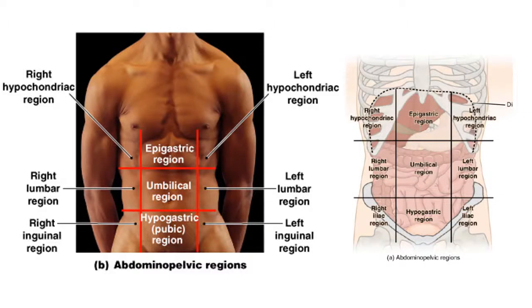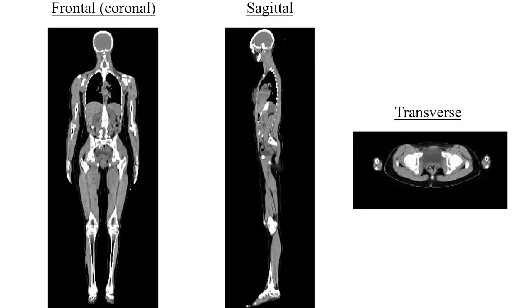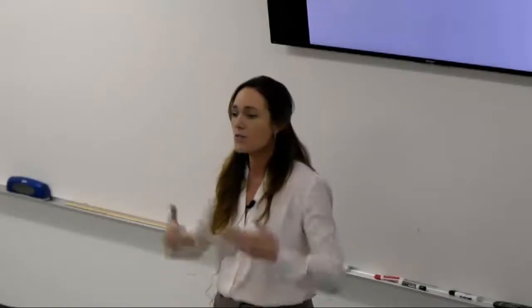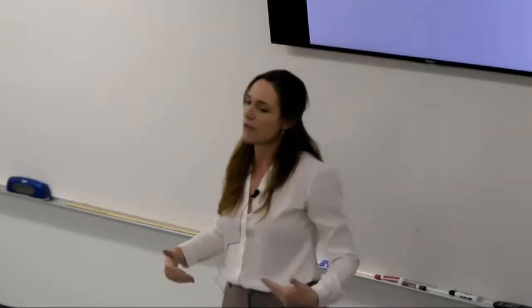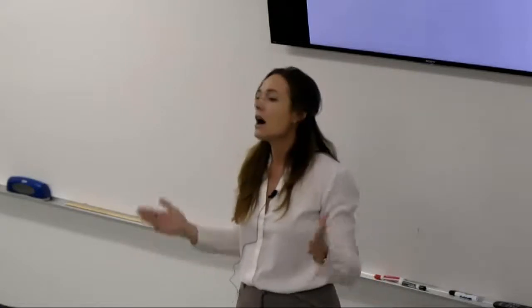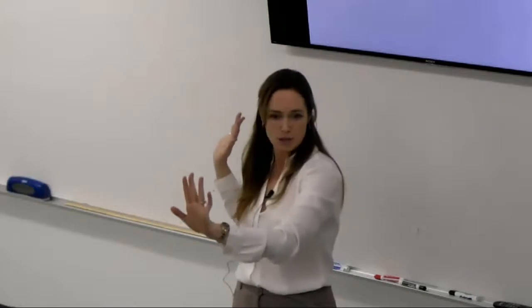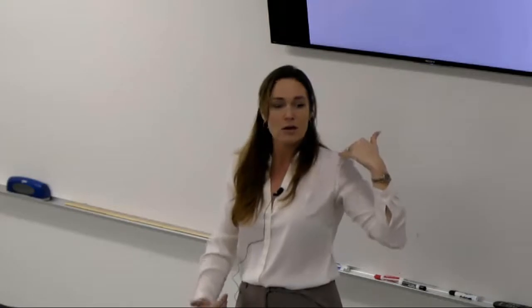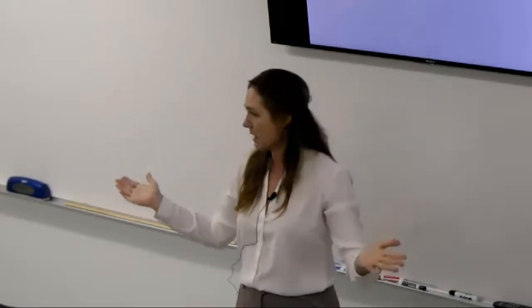Quadrants and regions — the test will have regions, not quadrants. That's the tic-tac-toe board arrangement, and you should know the nine regions. You should also know the divisional planes — how we slice the body. There are three planes: frontal or coronal splits the body into anterior and posterior halves; sagittal slices it straight down the middle into right and left sides; and transverse divides the body into superior and inferior portions.